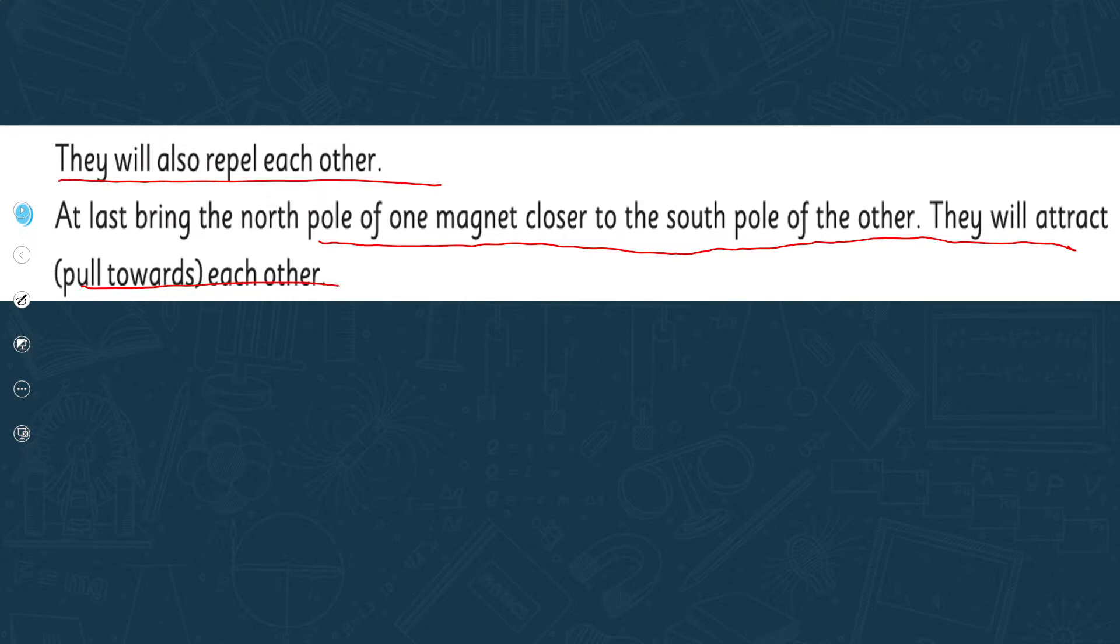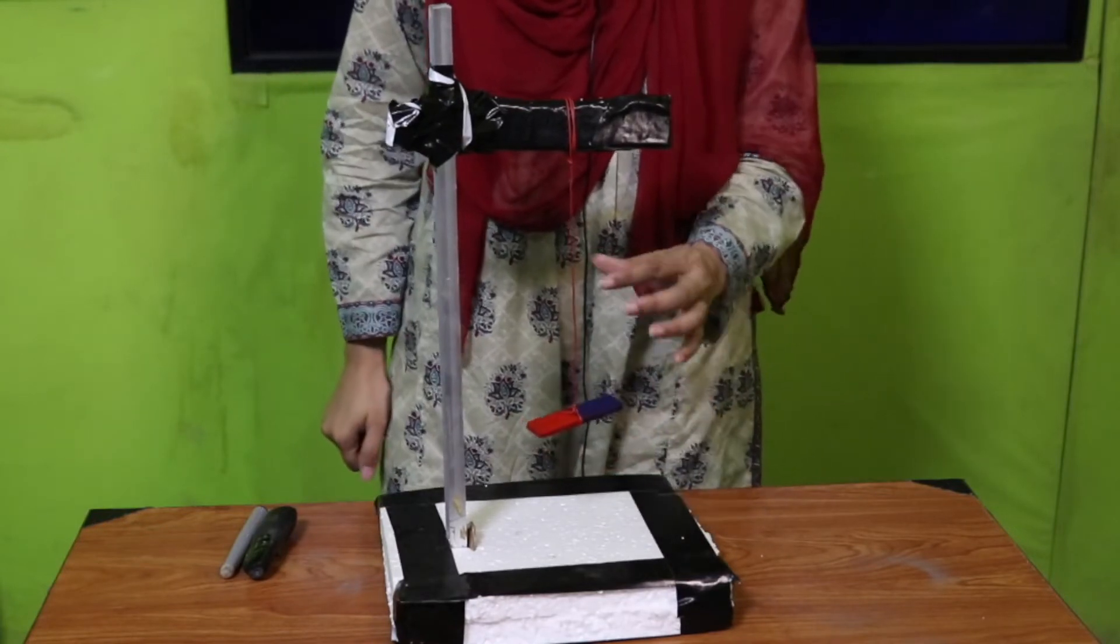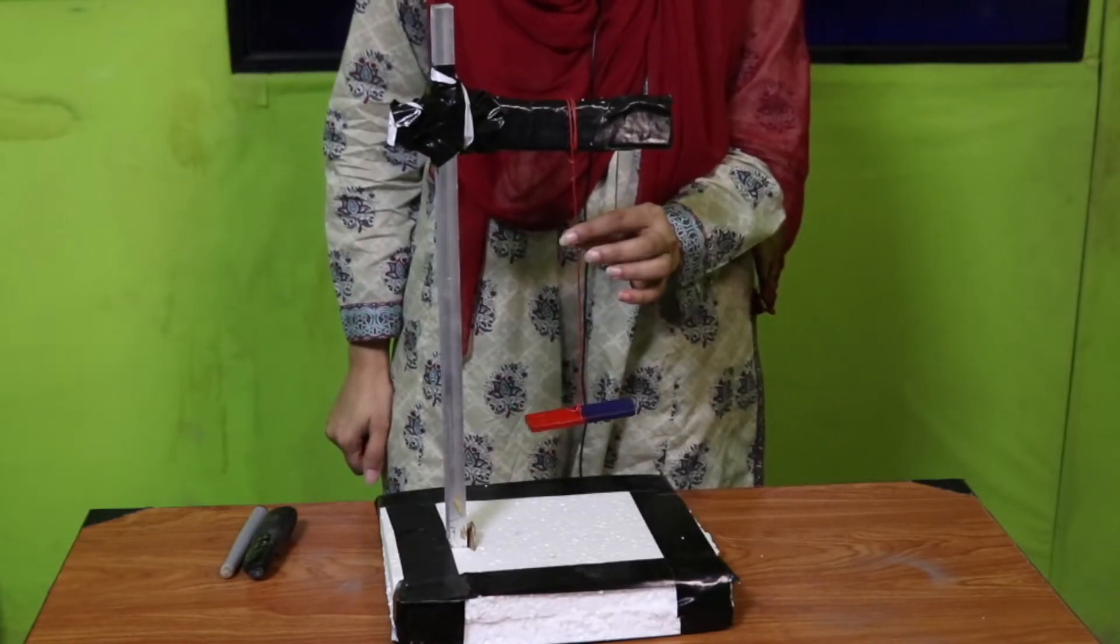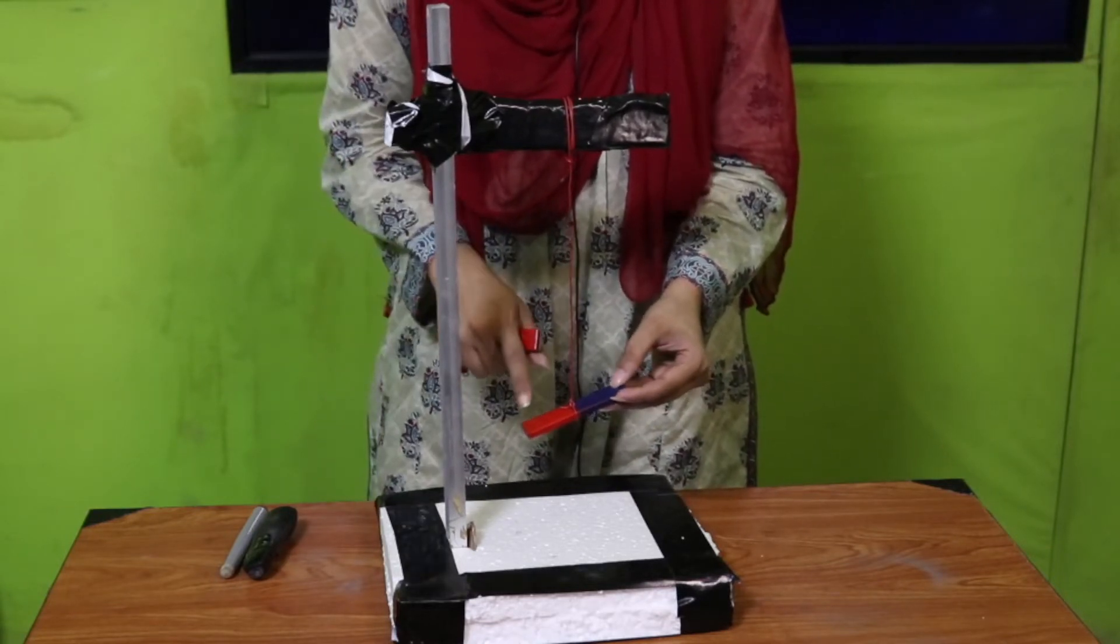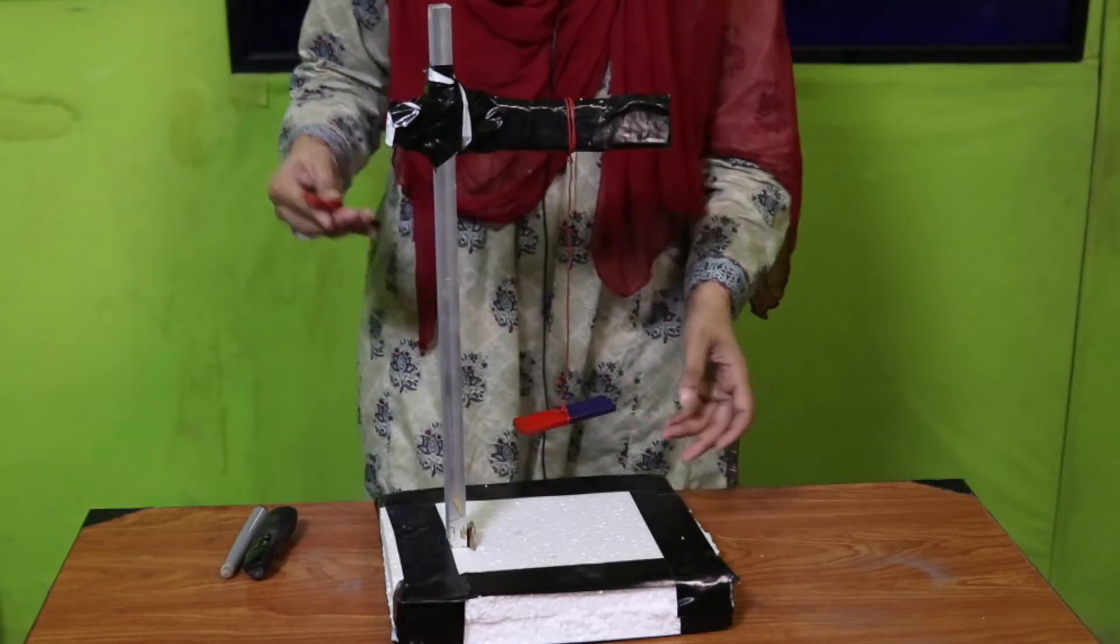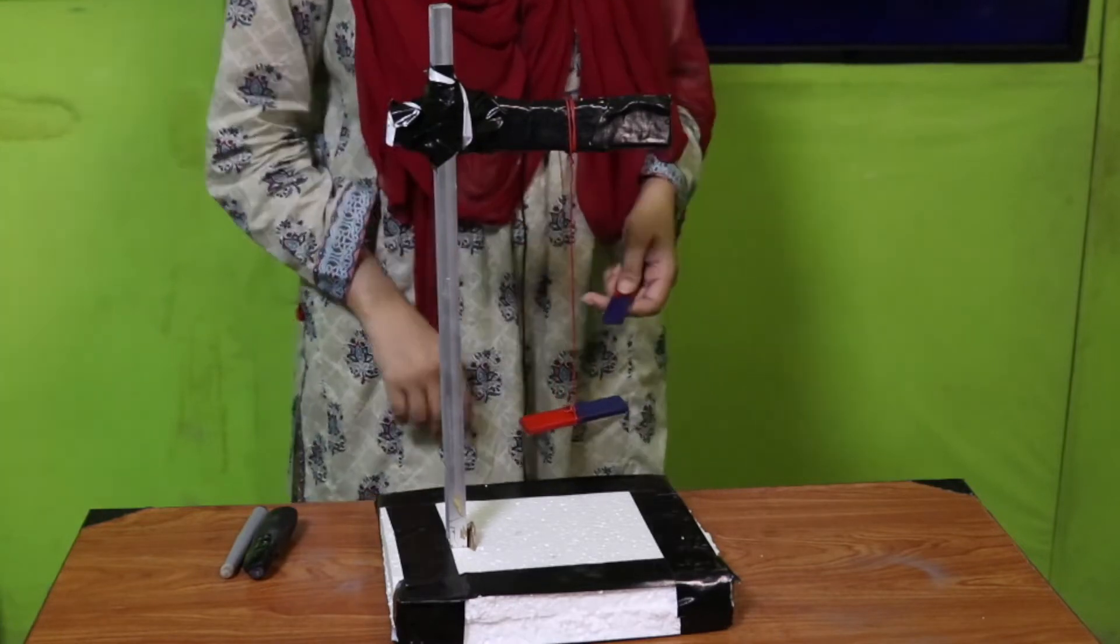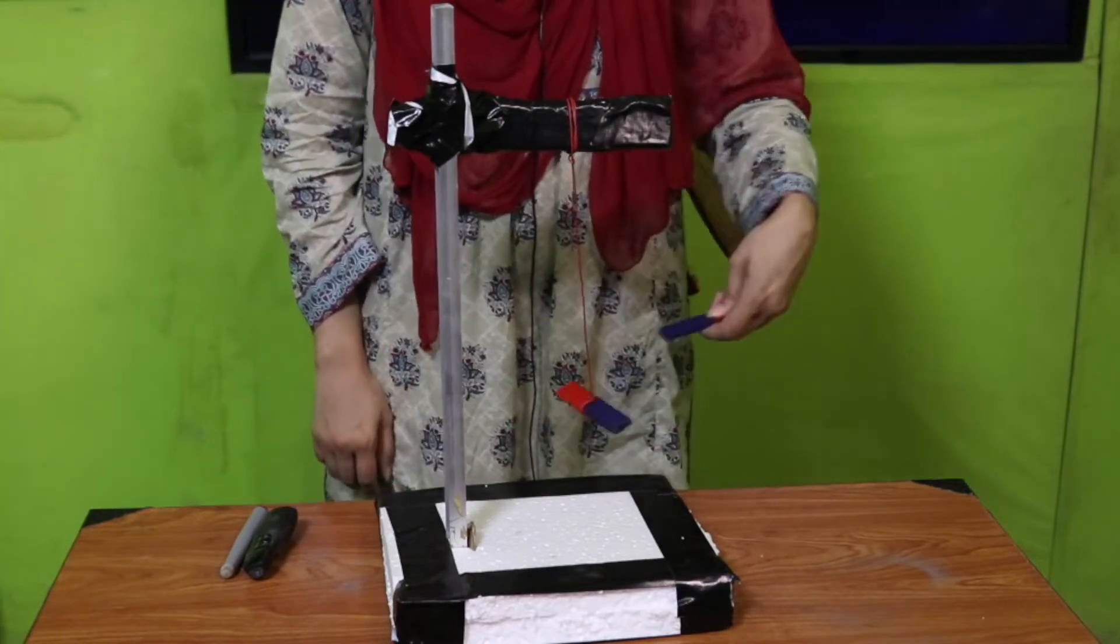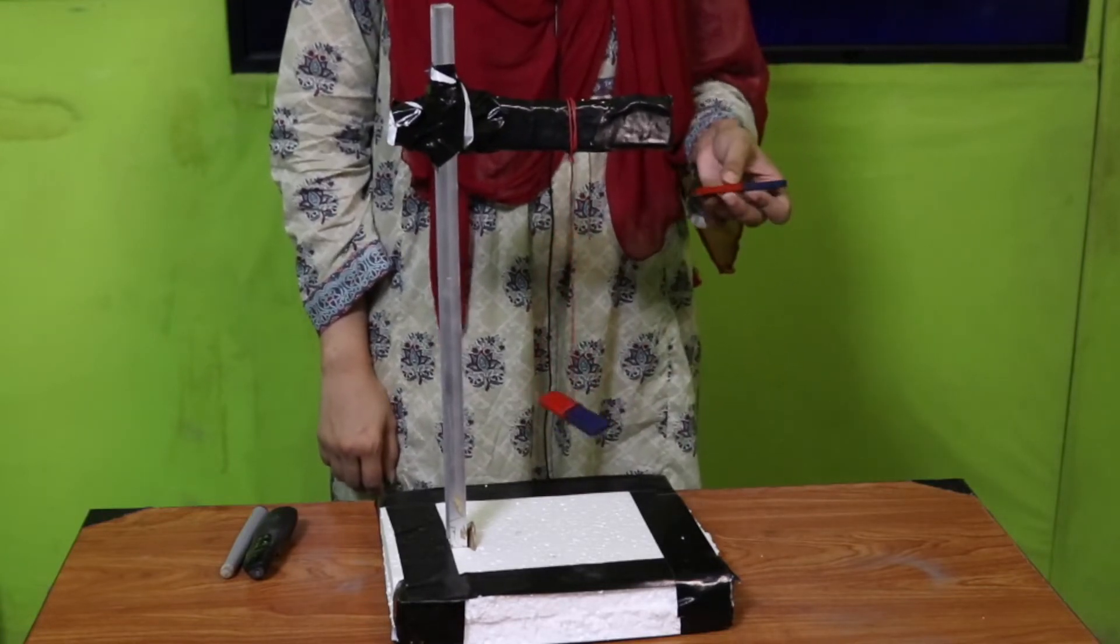First of all we need an iron stand, and on the iron stand with the thread we will hang the bar magnet. Here the blue one is south pole and the red one is north pole. In my hand there's another bar magnet. First I will bring south pole near south pole. It is repelling each other. They are not coming close.